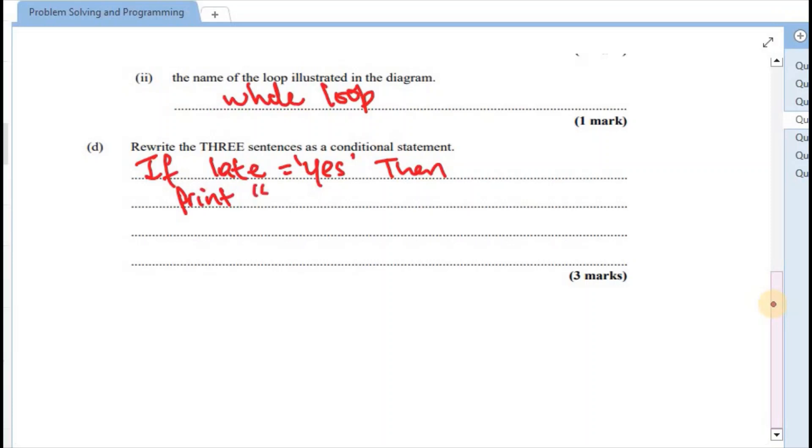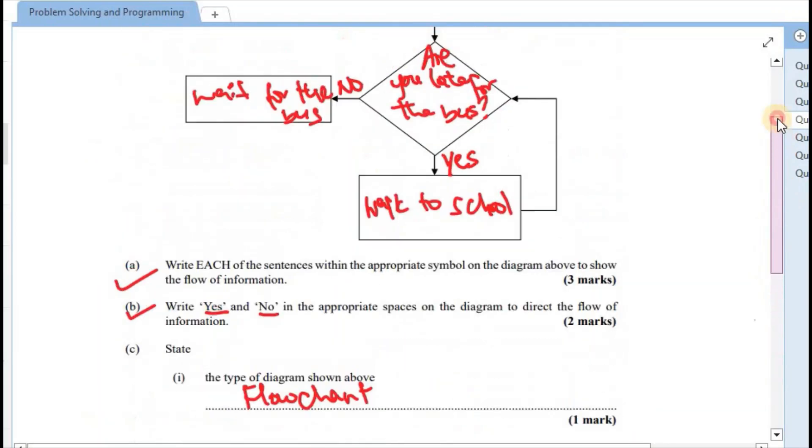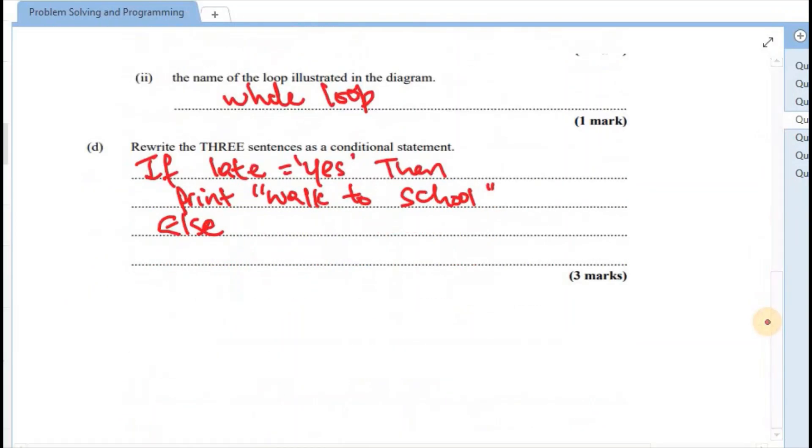Walk to school. Right. Or else, what's the next option? If they were not late for school, the next option would have been to wait for the bus. All right. So else, print wait for the bus. And that would have given us our total of three marks.